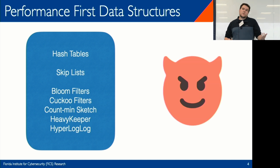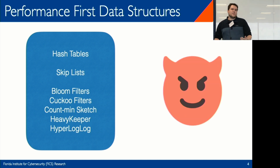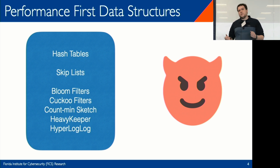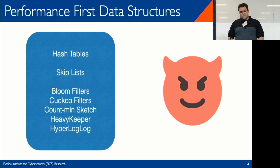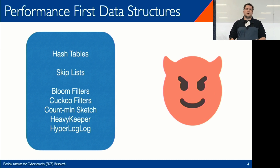But what happens to these nice guarantees in the average case — or even the worst case — when you let an adversary control some portion of the data being represented by these structures? We'll start with a motivating example of adversarial hash tables. These attacks, now called hash flood DOS attacks, have been around in the literature for over two decades, and they are quite conceptually simple.